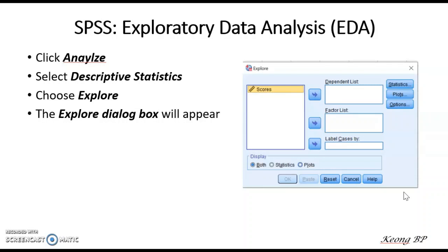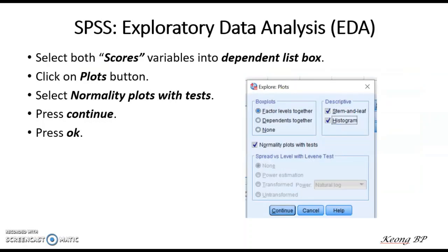First, open your SPSS software, then go to the menu bar, click Analyze, select Descriptive Statistics, and then choose Explore. The dialog box shown here will appear. Next, highlight 'scores' and transfer it into the dependent list. After you have done that, click on Plots. The Explore Plots dialog box will appear. In the Explore Plots dialog box, please select 'Normality plots with tests', press Continue, and then OK.